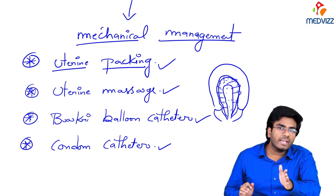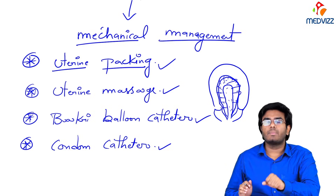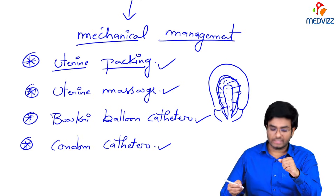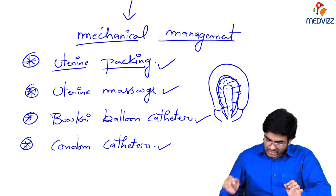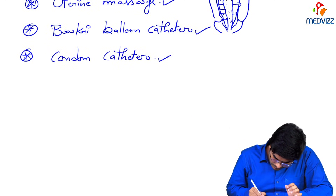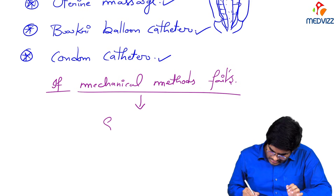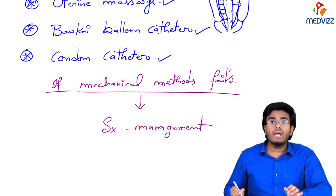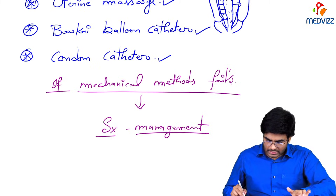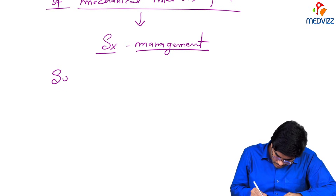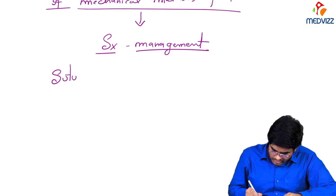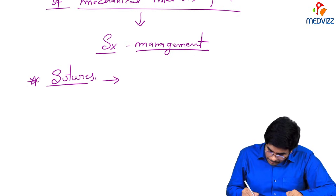You have tried medical management; it's not working. You shifted to mechanical methods — uterine packing, uterine massage, Bakri balloon catheter, or condom catheter. If mechanical management also fails, immediately go for surgical management. Under surgical management, you have to put sutures.